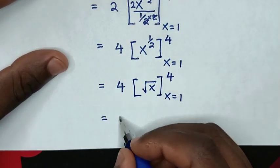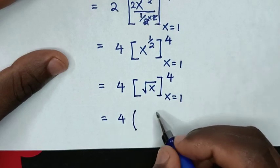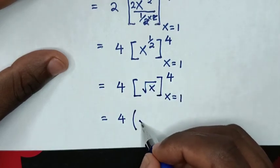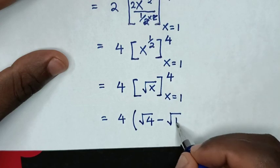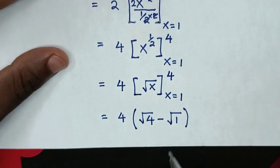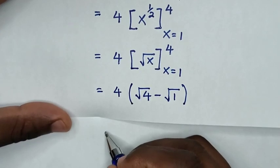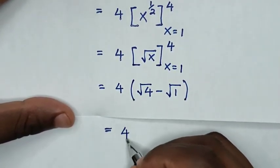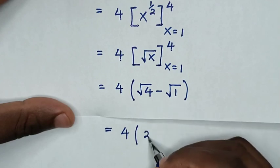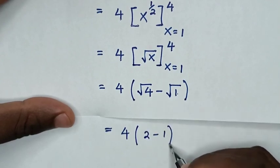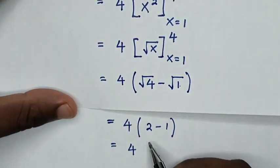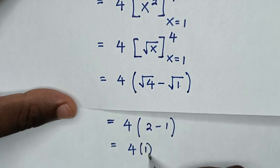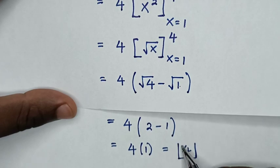Then it will be equal to 4 bracket, where we substitute x equals 4 giving square root of 4, minus substituting x equals 1 giving square root of 1, bracket. In the next step it will be equal to 4, then bracket square root of 4 is 2 minus square root of 1 is 1, bracket. Then it will be equal to 4 times 1, which equals 4. So this is our final answer.